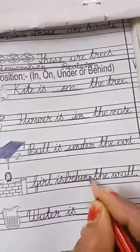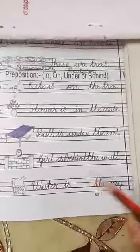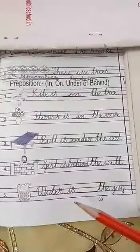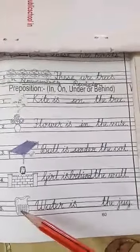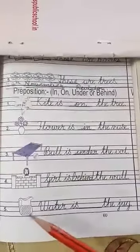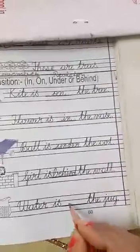Next number five. W-A-T-E-R water I-S is dash T-H-E the J-U-G jug. Water is dash the jug. Where is water? Tell me anyone. Look at this picture. Water is in the jug. Water कहाँ है? Water jug mein hai. To mein ke liye kis ka use karte hai? In ka. So we will write in here: I-N, in. Water is in the jug.